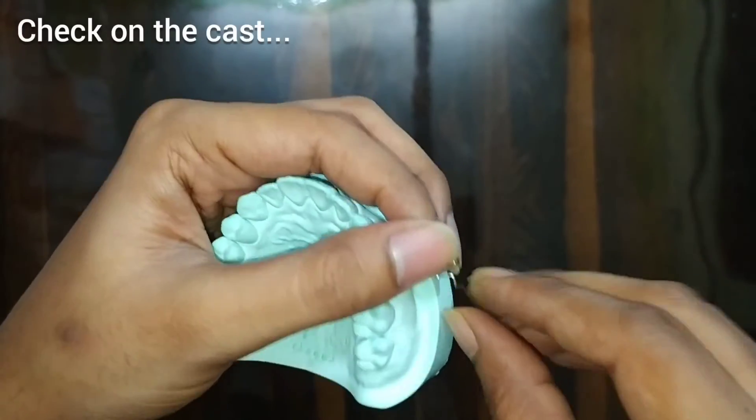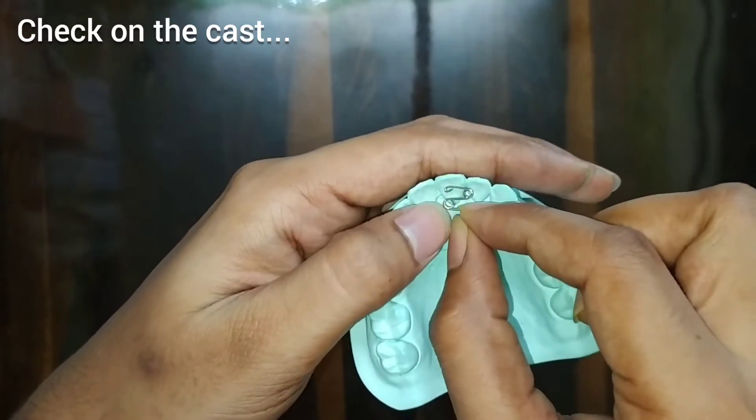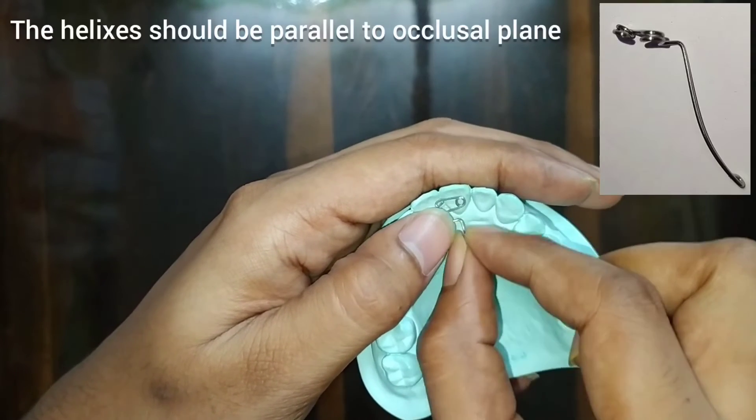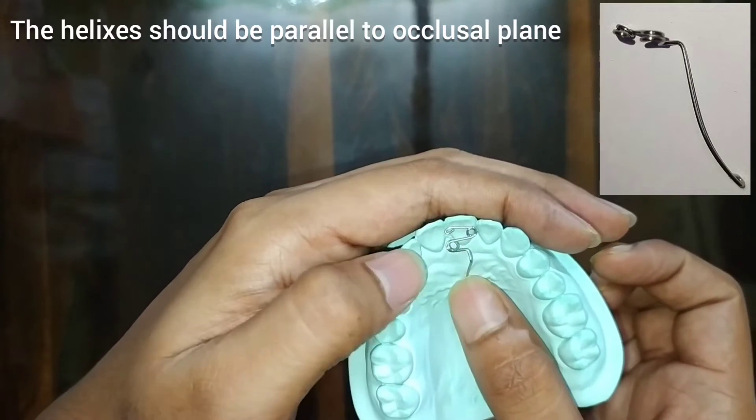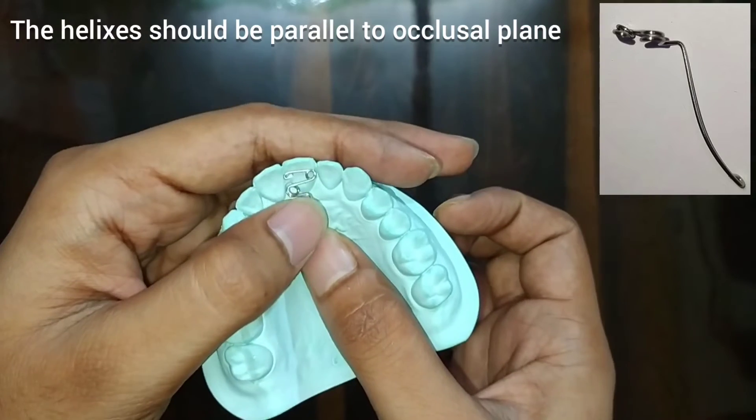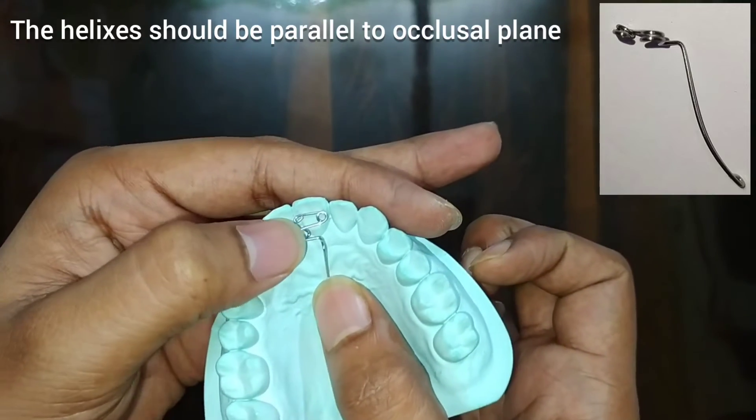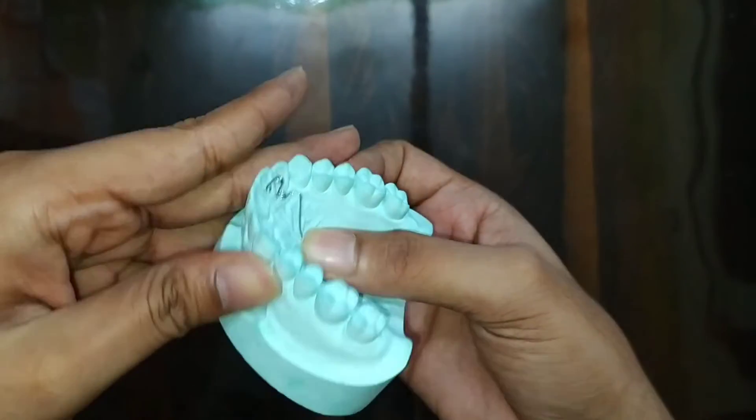We will check it on the cast. Make sure that the above portion is in the plane with the occlusal plane. You can see here there is a gap. The gap is necessary. It should not touch the ruges and all.